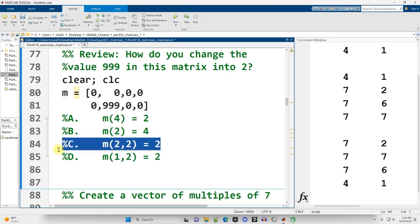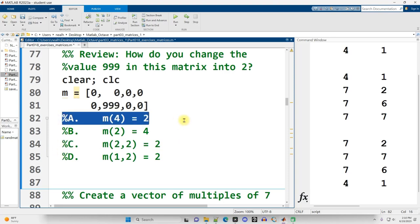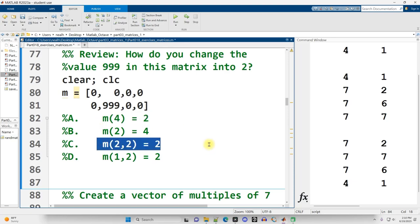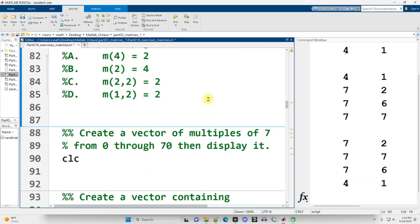So C is therefore correct. But interestingly, A is also correct. Because the numbering of matrices, if you're just using a single index, goes down the columns before moving to the right. So one, two, three, four. And you can test it out. This one will work. This one will also work. Those are correct. Continuing on down.